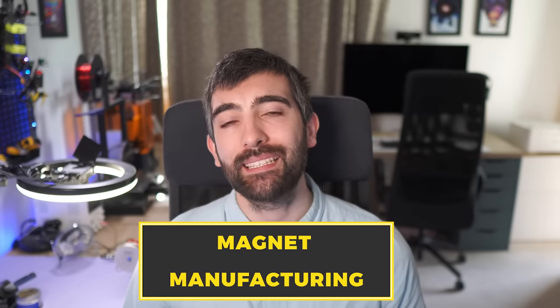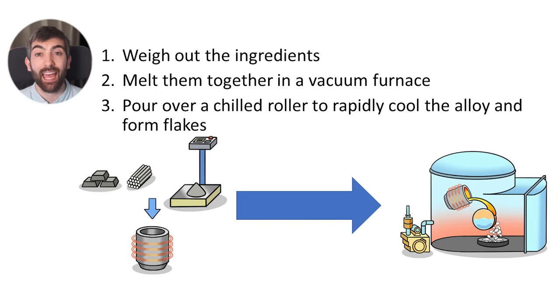To understand what makes the single piece ring magnet in the Smooth V2 so special first we need to understand how the super strong neodymium magnets that we use in our FPV motors are normally made. So firstly we take a whole bunch of different elements neodymium, iron, boron and small amounts of other alloying elements and we melt them together in an induction furnace under vacuum so we use an alternating magnetic field to inductively heat all these materials up until they melt and flow together and we do that under vacuum so there's no air no oxygen that can react with those materials when they're really really hot.